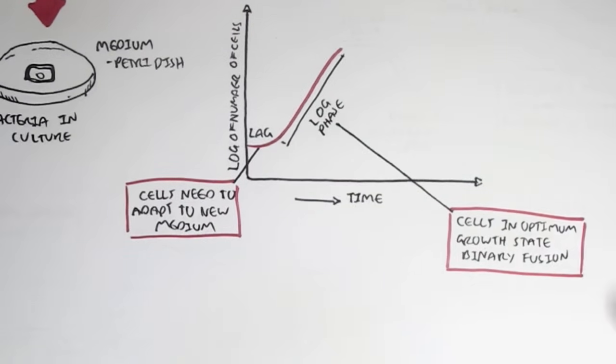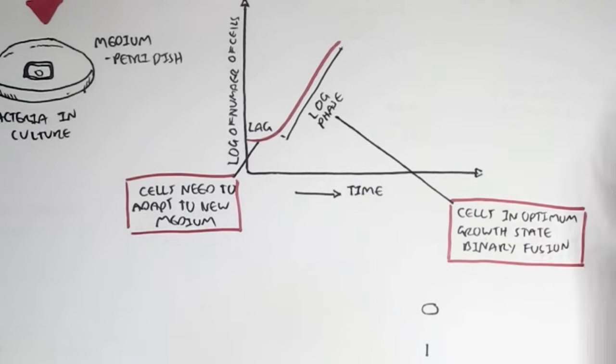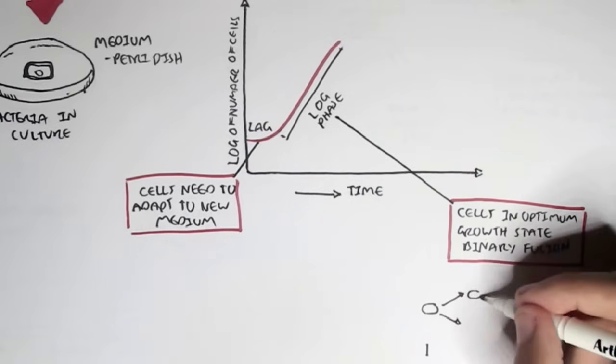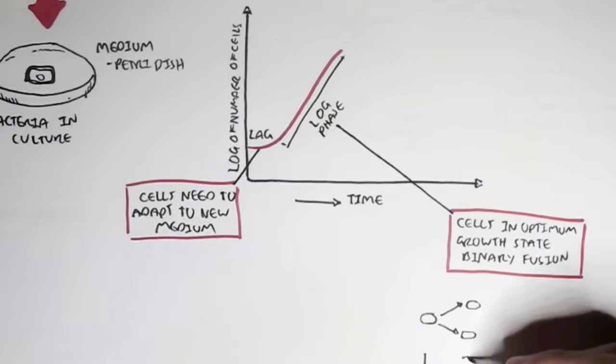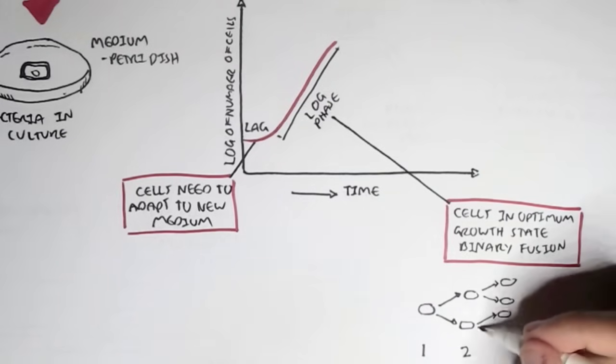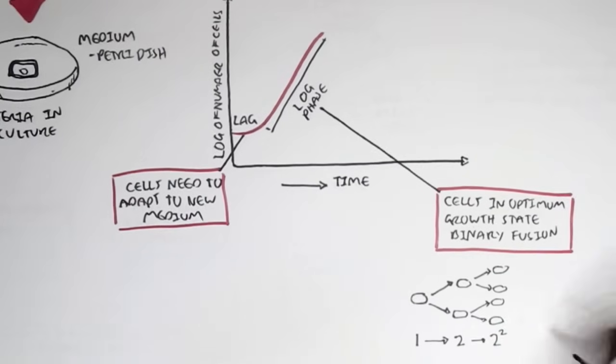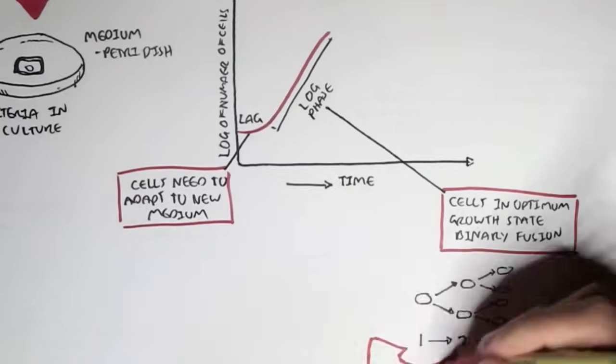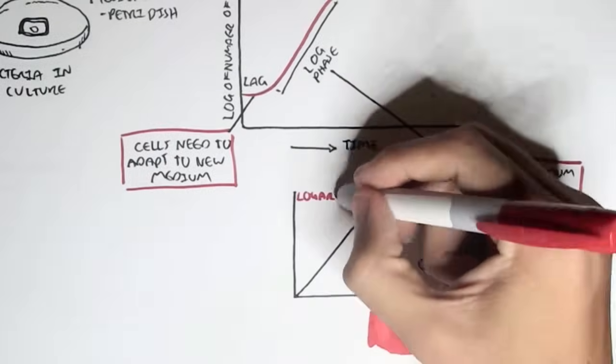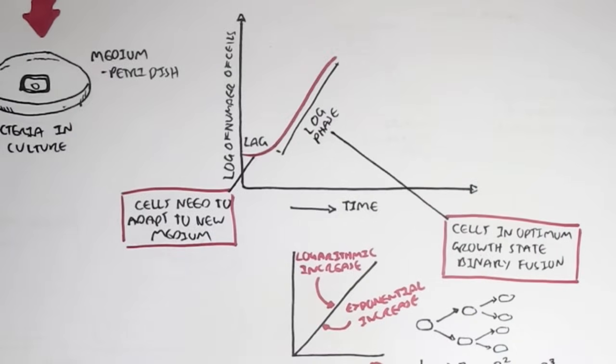What this means is that we start off with one bacteria. When it performs binary fission, we have two. Then binary fission again, we have two to the power of two, we have four. This process continues, two to the power of three, then two to the power of four. This process, where the bacteria keeps dividing in a linear sort of fashion, is known as a logarithmic increase in growth, or an exponential increase.